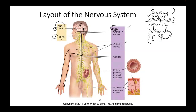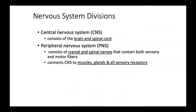So the central neural system is made up of the brain and the spinal cord, and the peripheral neural system is made up of cranial nerves and spinal nerves. Both of them have sensory and motor fibers. The sensory and motor fibers can connect to your muscles, to your glands, and to all of your sensory receptors.